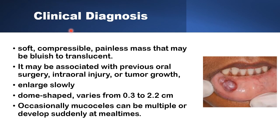Diagnosis is made on clinical grounds. It is a soft, compressible, and painless mass that may have either a bluish or translucent color. It may be associated with previous oral surgery, injury, or even previous tumors in the oral cavity, and it enlarges very slowly. It is dome-shaped, with size varying from less than 3 millimeters to 22 millimeters. Occasionally they can be multiple, but the vast majority are single mucoceles, and rarely they can develop suddenly at mealtime.